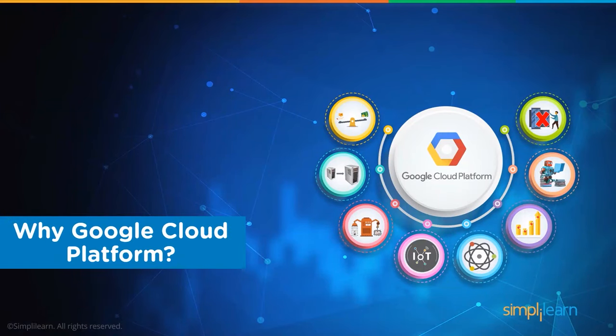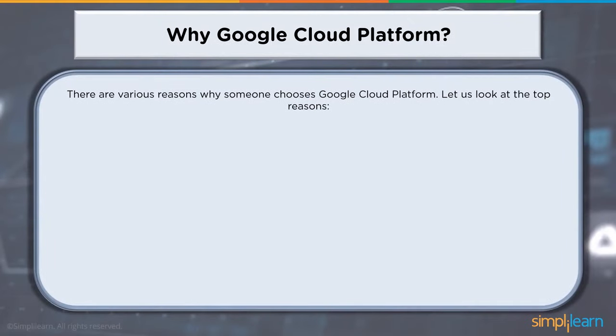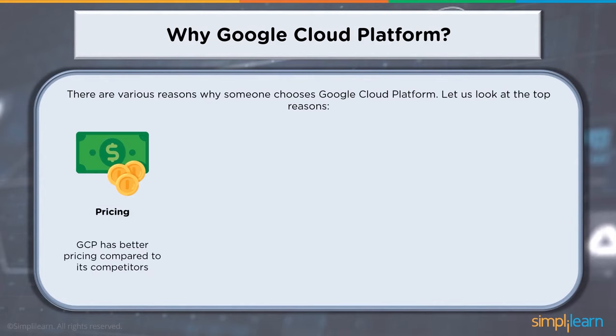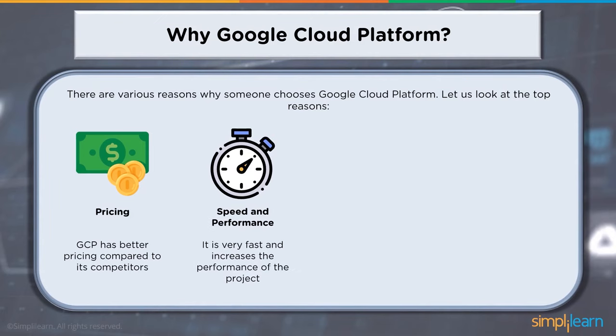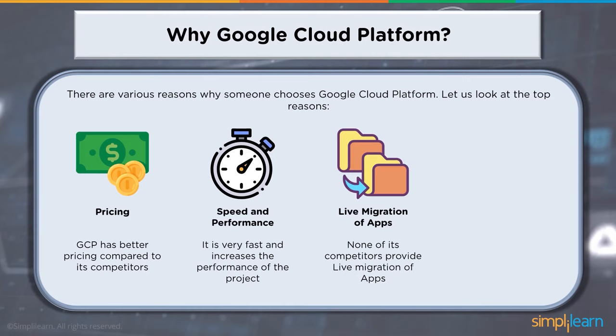When we talk about why Google Cloud Platform, there are various reasons to choose it. GCP has better pricing compared to its competitors. When it comes to speed and performance, it is very fast and increases project performance. For live migration of apps, there are huge numbers of solutions which help an organization integrate with or completely migrate to the cloud platform. None of Google's competitors provide live migration of apps.